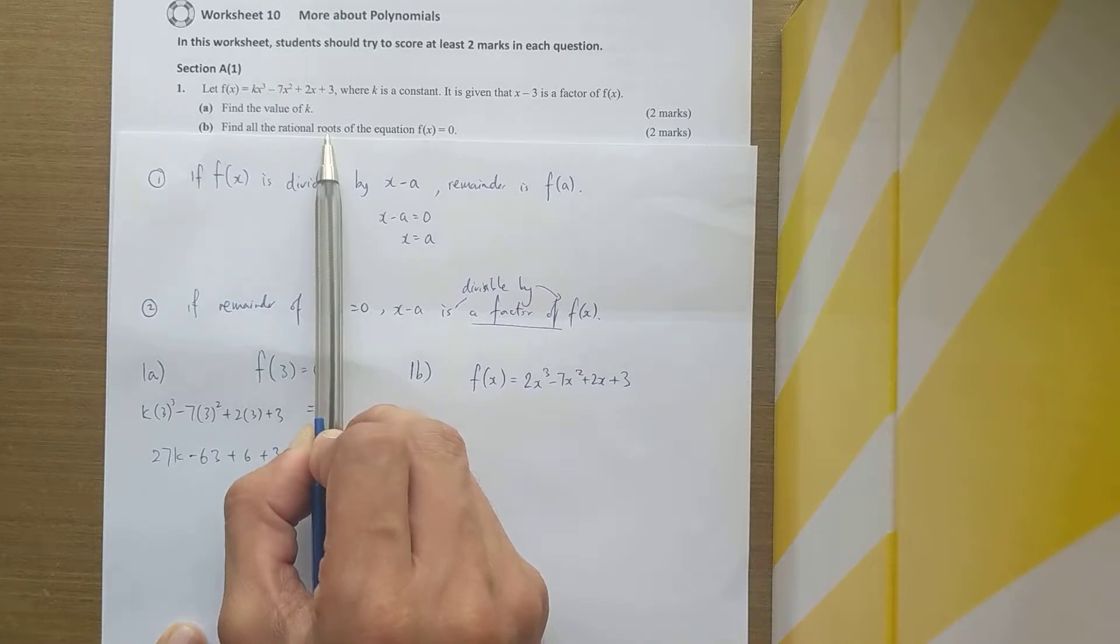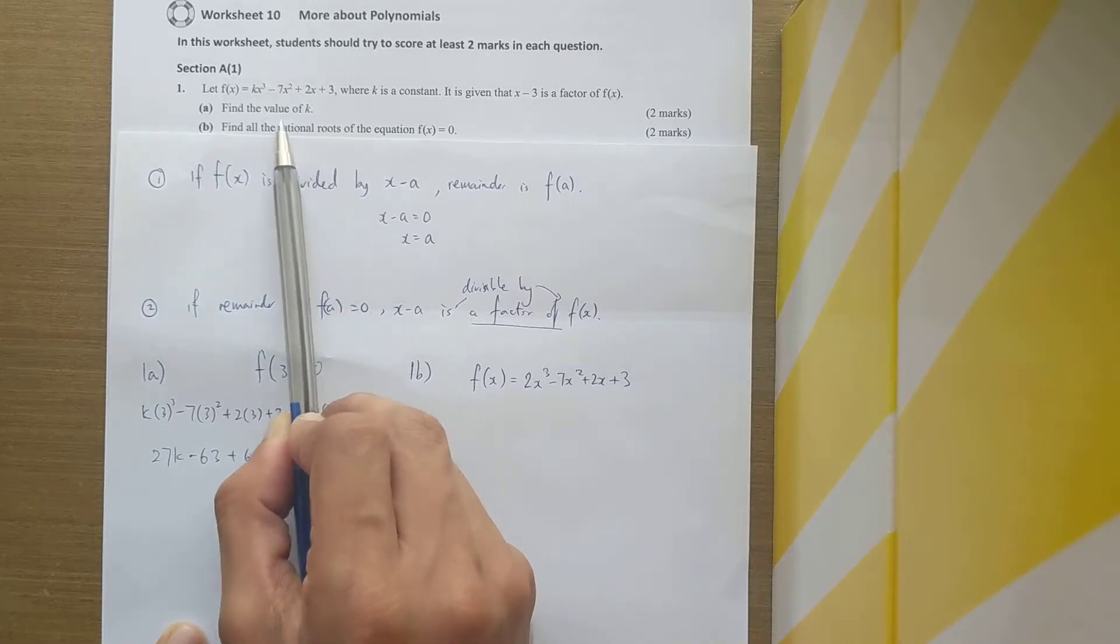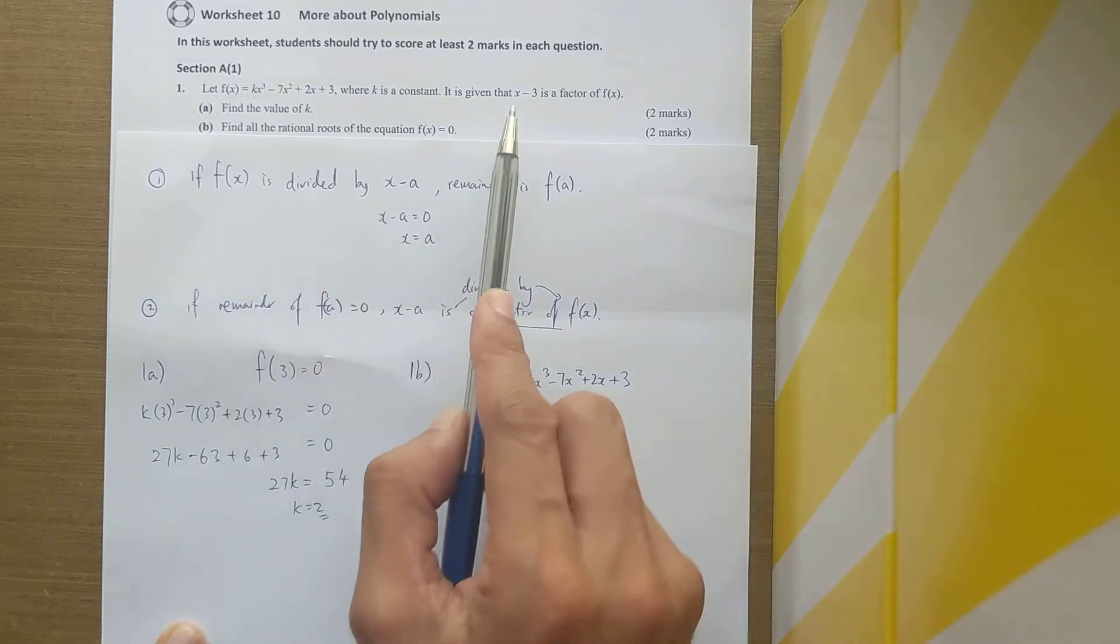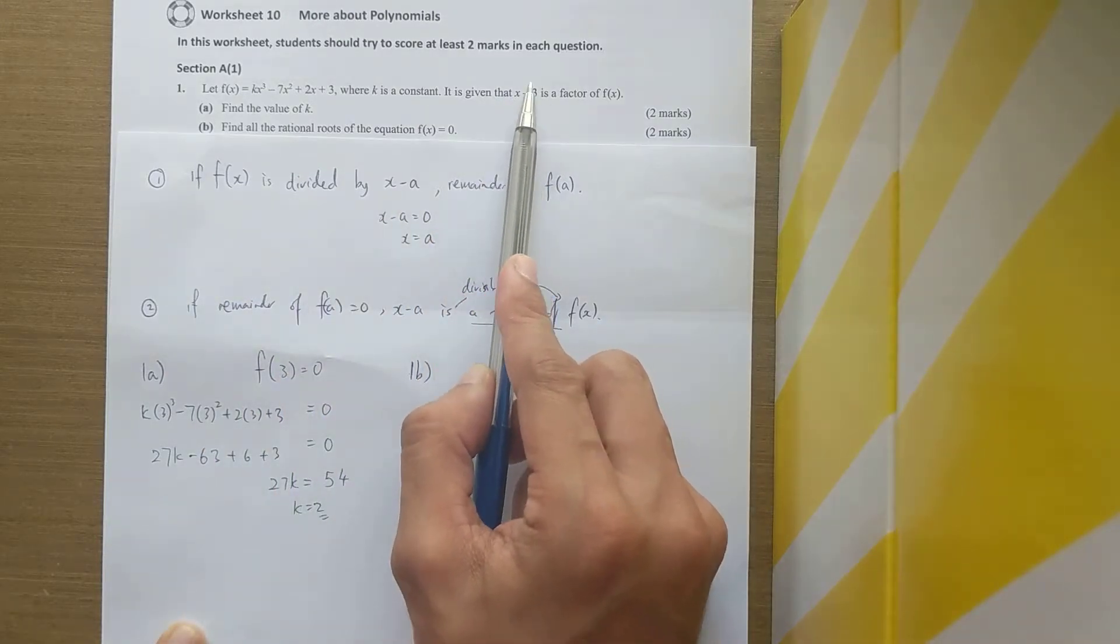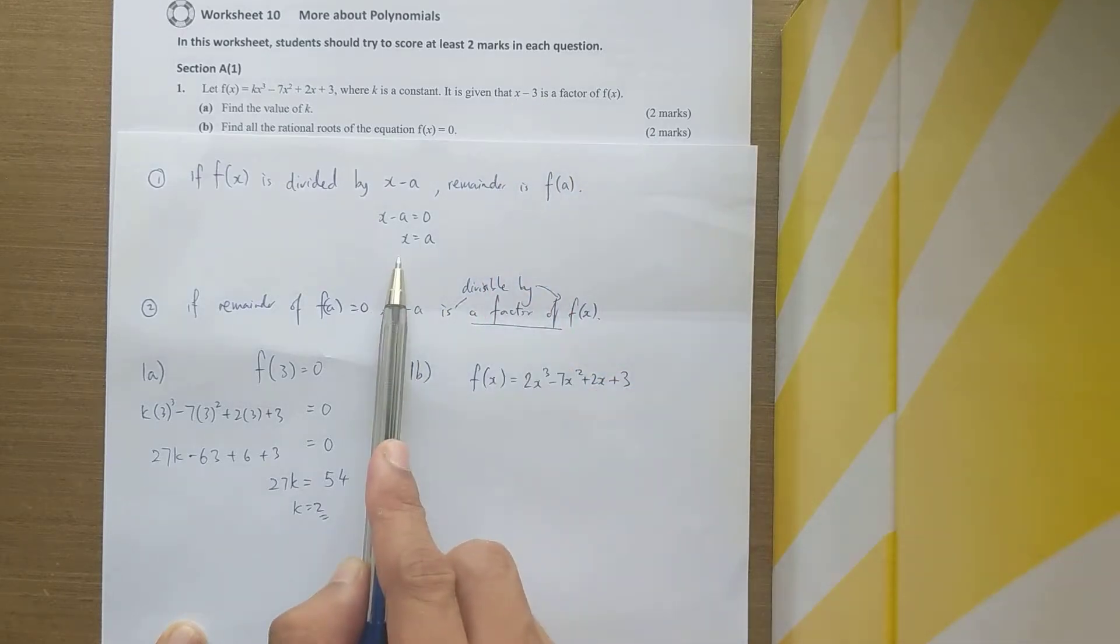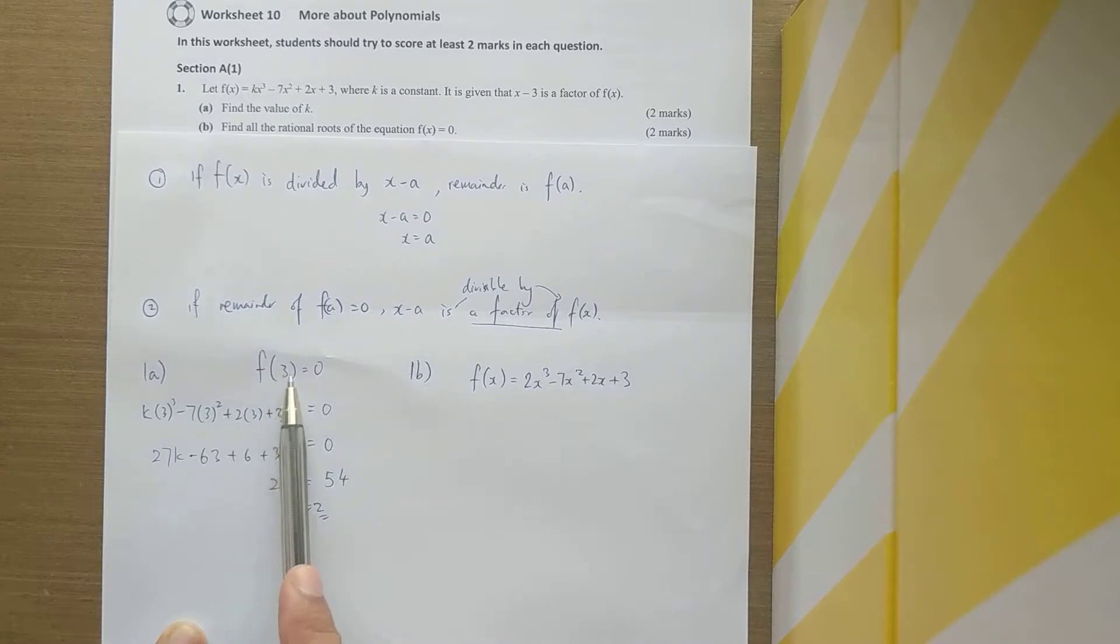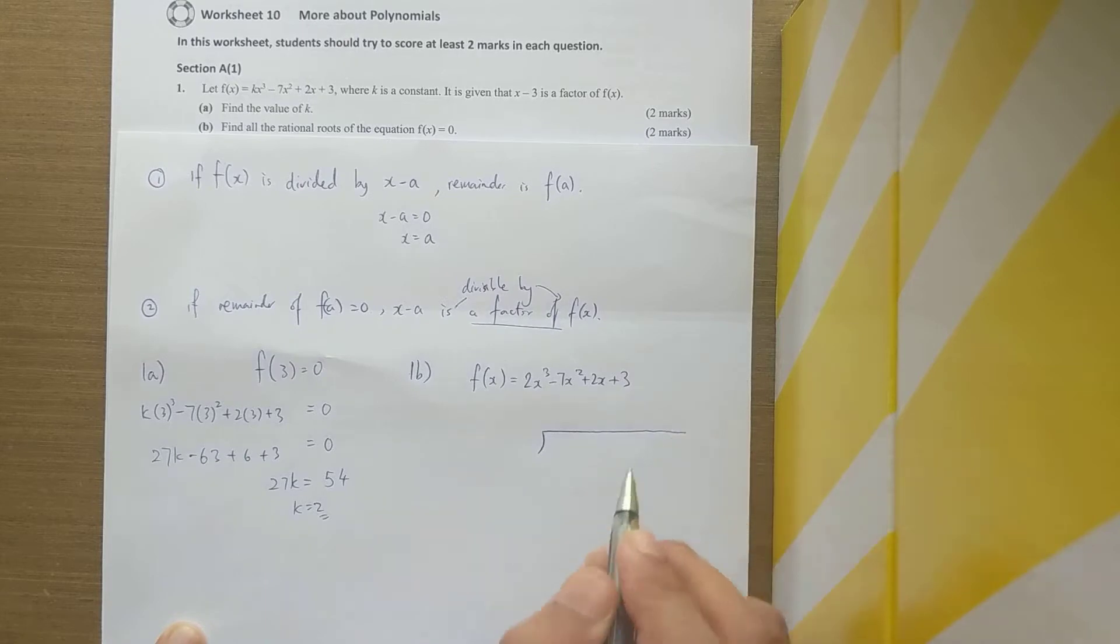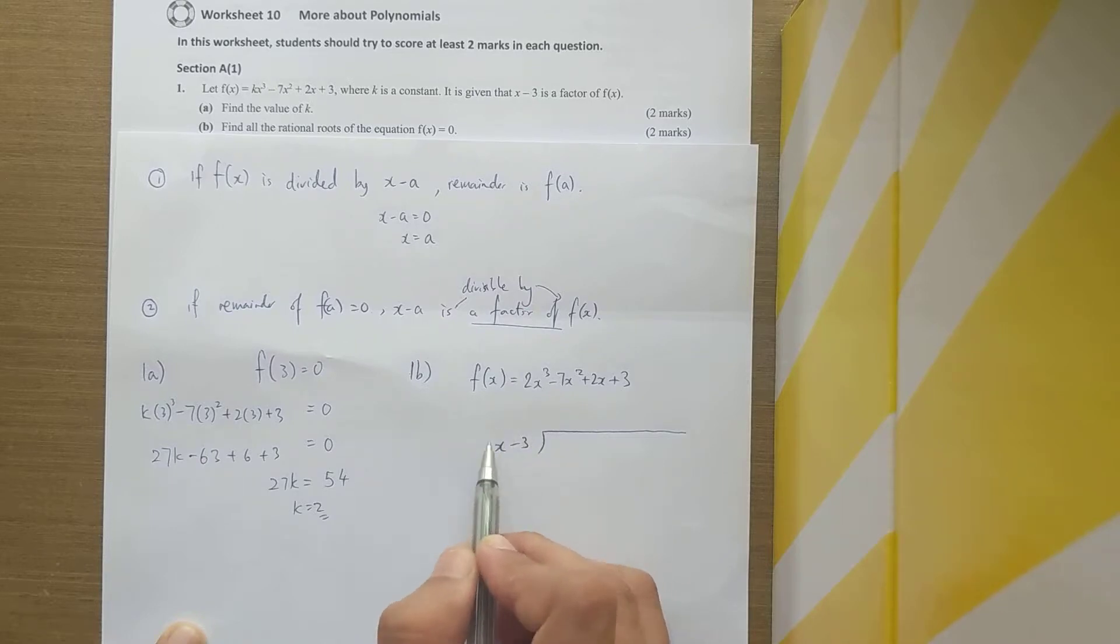Now in part b they're asking you to find all the rational roots. How can I find the roots? I need to know the first root. Actually, in part a they gave us the root because they tell us x minus 3 is a factor, so when x minus 3 is 0, x is equal to 3. So 3 is already your first root. By using your first root, you'll be able to find the remaining roots by using long division.